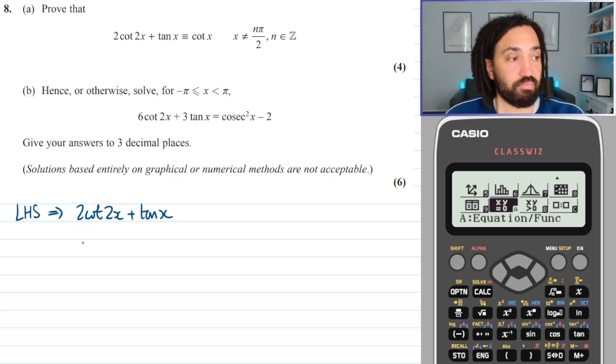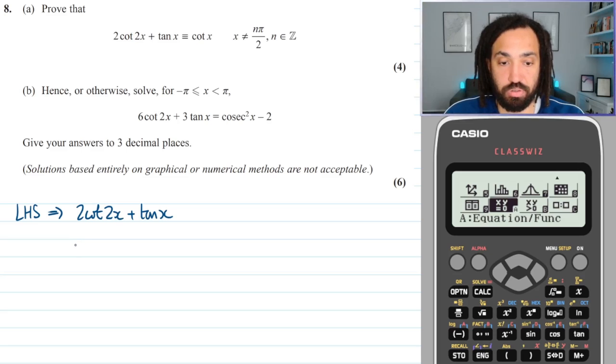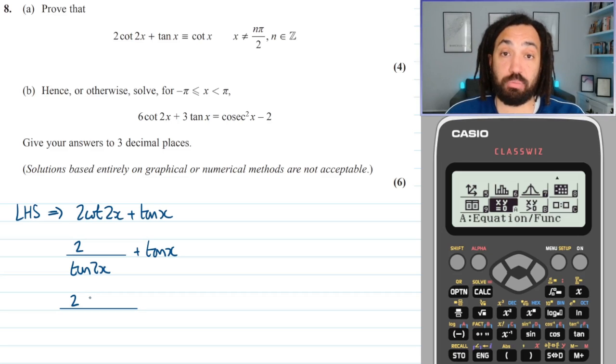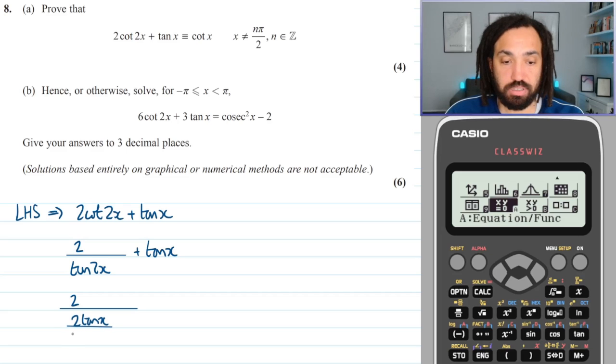So with that being said, 2 cot 2x is the same as 2 over tan 2x because cot is the reciprocal of tan. Now the next thing we can do is we can write out an expression for tan 2x in terms of just tan x using our double angle formula. So the double angle formula for tan 2x is 2 tan x divided by 1 minus tan squared x.